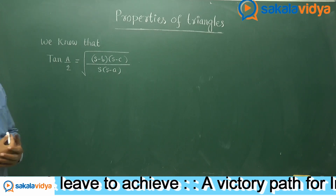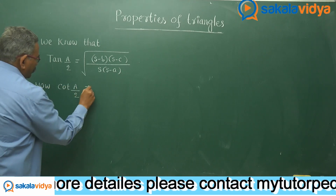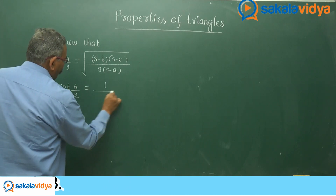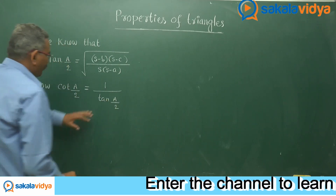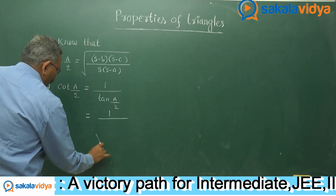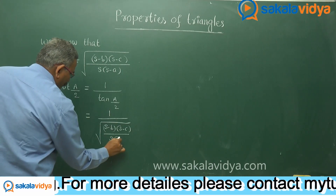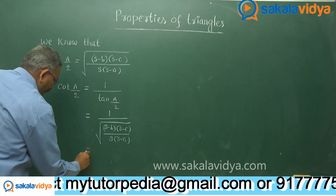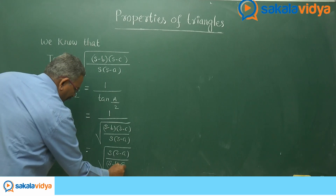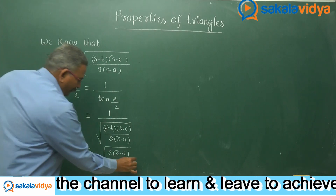So now let us formulate cot(a/2). As we know, cot(a/2) is nothing but the reciprocal of tan(a/2), so we can write 1 by tan(a/2). Replacing the value, we get 1 upon root over (s-b)(s-c) upon s(s-a), which simplifies to root over s(s-a) by (s-b)(s-c). This is the cot(a/2) formula — but this is one of the ways.